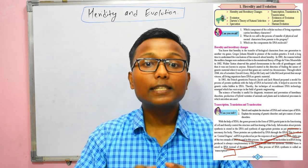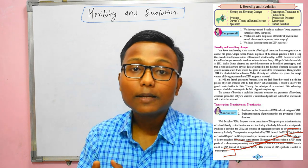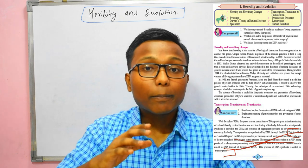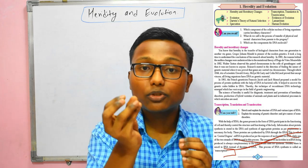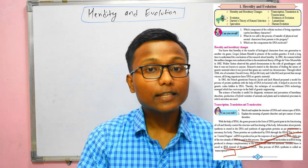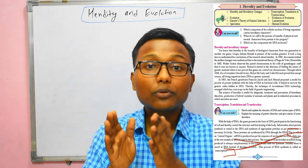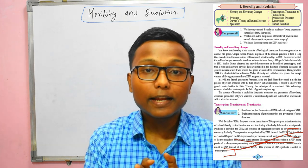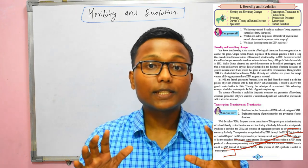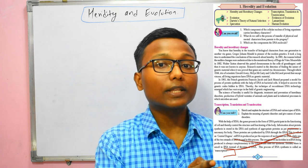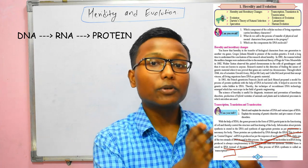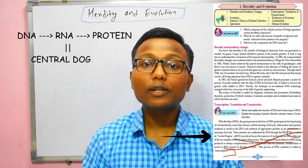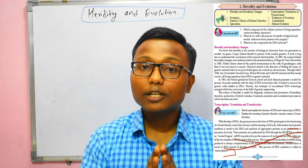Protein is synthesized with the help of DNA. Whatever protein is required in the body, that information is encoded in the DNA. This protein synthesis process happens in two steps: first, DNA is used to make RNA, and then RNA is used to make protein. The whole process of DNA to RNA to protein is called the central dogma. We will see this in detail in the next video on page number 2.